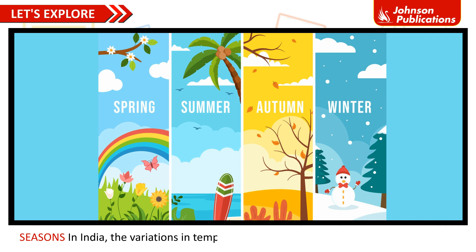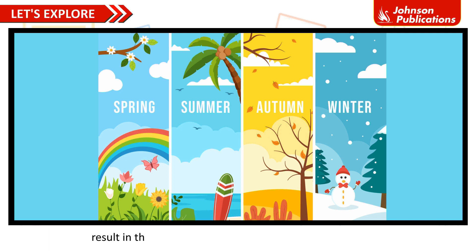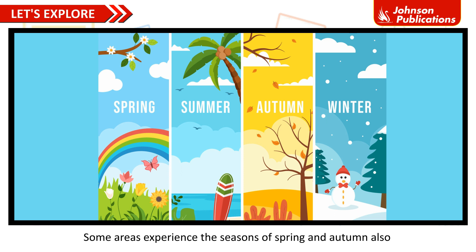In India, the variations in temperature, rainfall and direction of monsoon winds result in three main seasons: summer, winter and monsoon. Some areas experience the seasons of spring and autumn also.